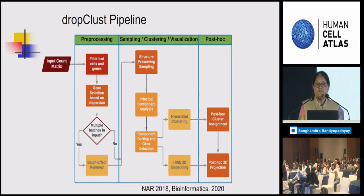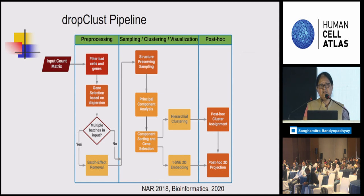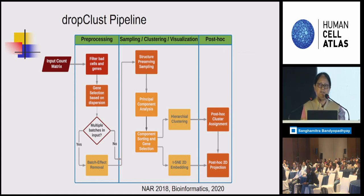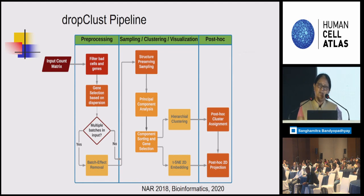The structure-preserving sampling helps retain very small clusters. In single-cell data analysis, we know there are rare cell types with very few cells that need to be detected. This structure-preserving sampling uses locality-sensitive hashing, which I will describe shortly. We then do principal component analysis with some modification, followed by normal clustering, and then the post-hoc assignment.